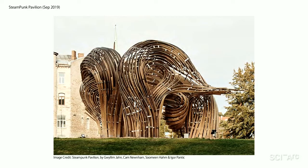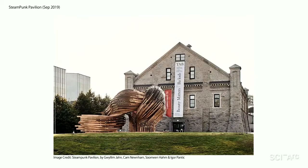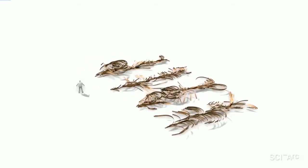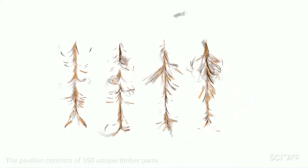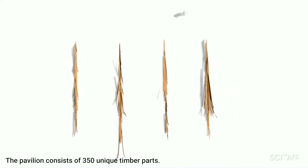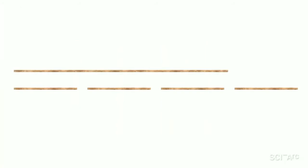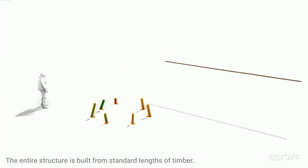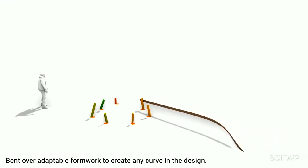Inheriting this idea, in the Steampunk Pavilion — designed by myself, Igor, Guil, and Cam — we use the same design process. The pavilion is made out of thin bent timber stripes, which themselves do not have a precise relationship to the global shape. Each stripe was assembled from standardized three-meter-long segments.